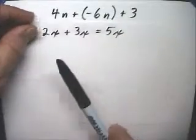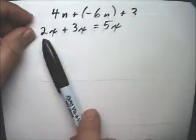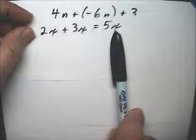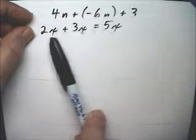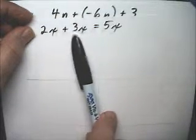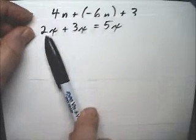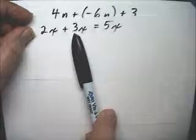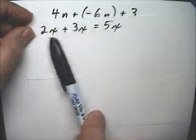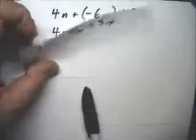We've already done like term problems like this. 2x plus 3x was 5x. 2x and 3x are like terms. They're so similar. It's like two of these things. Here we have two of these things. Here we have three of these things. Altogether we have five of these things.